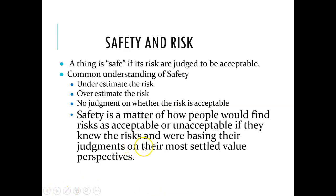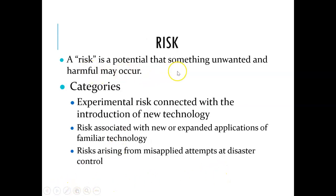First, we should know what is meant by safety and risk. Something is safe if its risk is judged to be acceptable. Common understandings of safety either underestimate or overestimate the risk, with no judgment on whether the risk is acceptable. Safety is a matter of how people find risks acceptable or unacceptable if they knew the risk. Categories of risk include: experimental risk connected with the introduction of new technology, risk associated with new or expanded applications of familiar technology, and risk arising from misapplied attempts at disaster control.